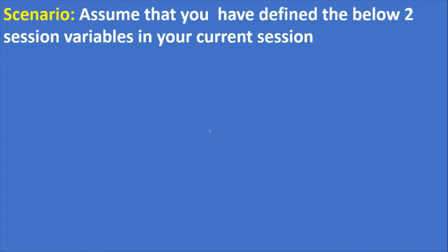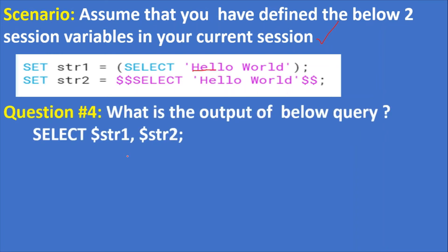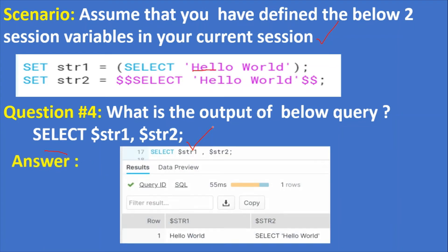The next question: assume you have defined the below two session variables. SET str1 = (SELECT 'hello world') — here 'hello world' is a string in single quotes inside parentheses. SET str2 = $$SELECT 'hello world'$$ — using dollar-dollar quoting. The question is: what is the output of SELECT $str1, $str2? The answer is: str1 returns 'hello world' and str2 returns the entire string 'SELECT ''hello world'''.